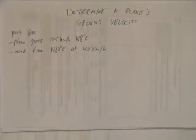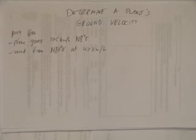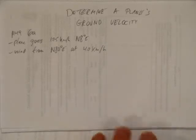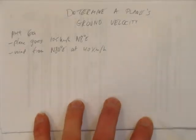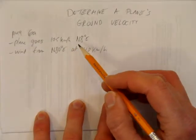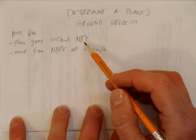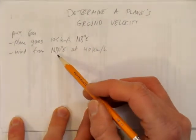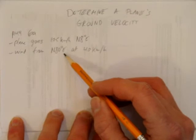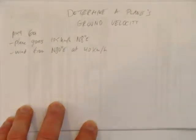In this video, we'll look at how to determine a plane's ground velocity. This question is right out of your textbook, page 149, question 6a. It describes a plane that's going 175 km per hour in a direction of north 8 degrees east, and the wind is coming from a direction of north 80 degrees east at 40 km per hour.